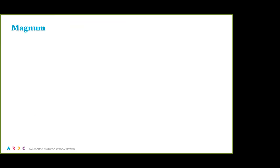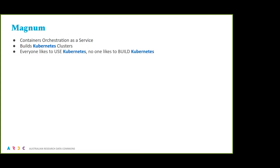Luckily there's a technology that solves this packaging and library problem — containers. The other thing we're doing with containers is a service called Magnum, which is container orchestration as a service — it builds Kubernetes clusters. Generally people want to use Kubernetes but nobody wants to build or manage Kubernetes clusters. Magnum allows a user to simply go through a dashboard interface, say 'spin up a Kubernetes cluster for me and give me kubectl,' and from there get their cluster and control it.